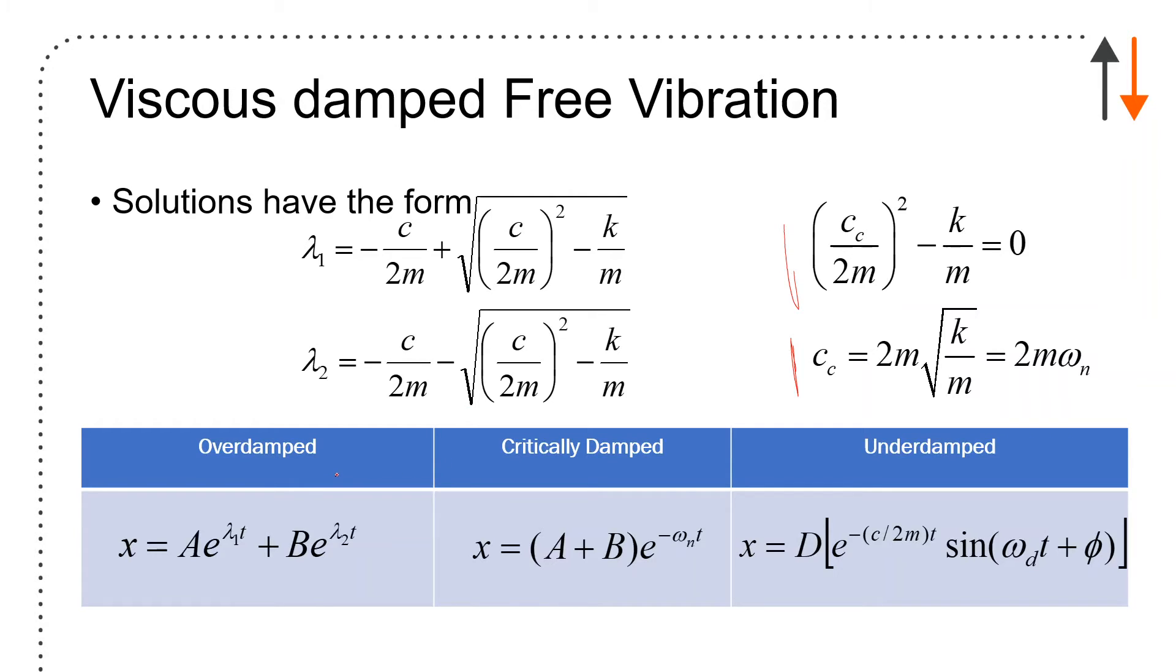When c > c_c (overdamped), you have an equation like this. Critically damped has two solutions: (A + Bt)e^(-omega_n*t). Finally, underdamped where c < c_c, you have oscillation that occurs. The first two approaches give monotonically decreasing functions; the last one has oscillations and vibration in its solution.